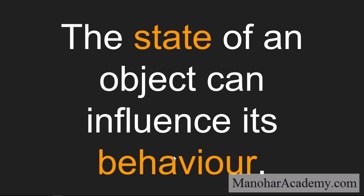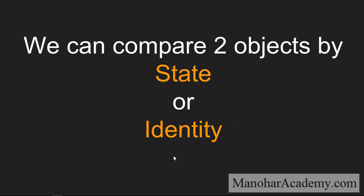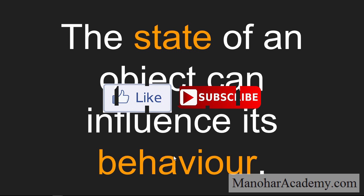These are the two things to remember: we can compare two objects by their state or their identity; objects may have the same state but different identities; and the state of an object can influence its behavior. That is all from this lesson. Welcome back to Manohar Academy — if you haven't subscribed already, please go ahead and subscribe. If you liked this video and benefited from it, please share it with your friends so they can learn also. Make sure you like this video. Thank you — we'll see you in the next lesson.